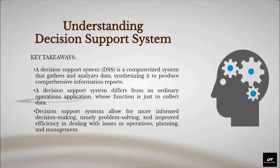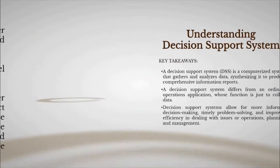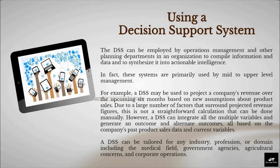Key takeaways on DSS: A Decision Support System is a computerized system that gathers and analyzes data, synthesizing it to produce comprehensive information reports. A DSS differs from an ordinary operations application, whose function is just to collect data. Decision Support Systems allow for more informed decision-making, timely problem-solving, and improved efficiency in dealing with issues or operations, planning, and management. The DSS can be employed by operations management and other planning departments in an organization to compile and synthesize data into actionable intelligence. These systems are primarily used by mid- to upper-level management.